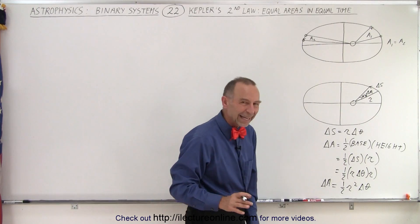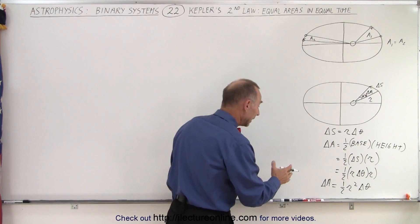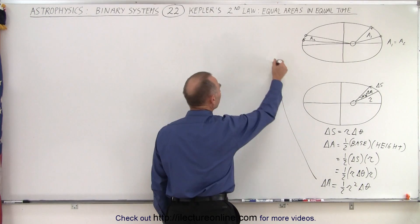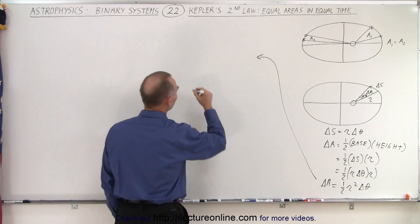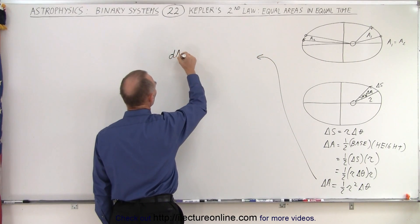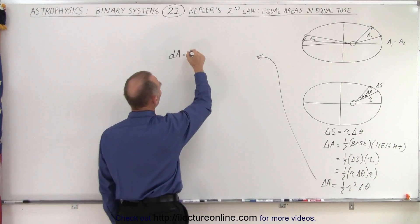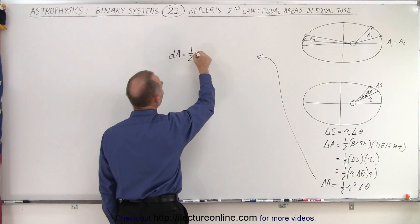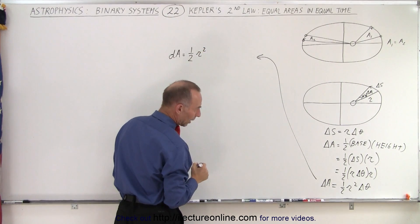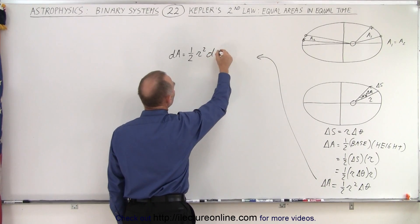Now let's write that in differentials rather than in deltas, like this. So then we come up here, and we'll rewrite it as follows. We can say that dA, a small amount of change in the area, is equal to one half the radius of the orbit squared times d theta.